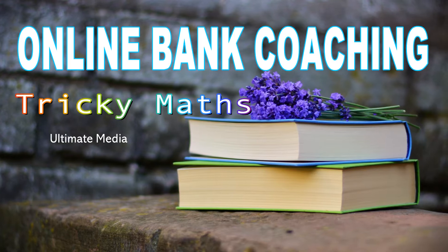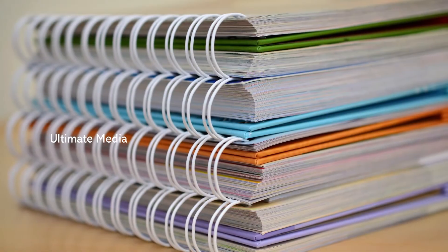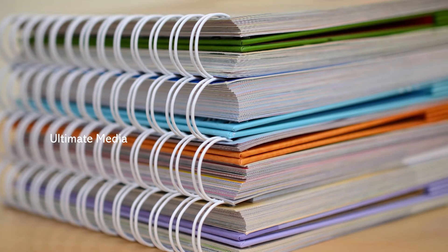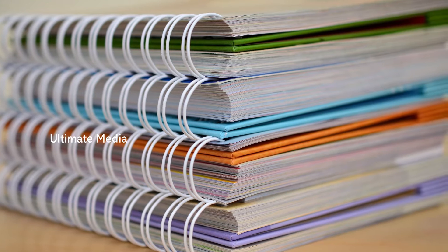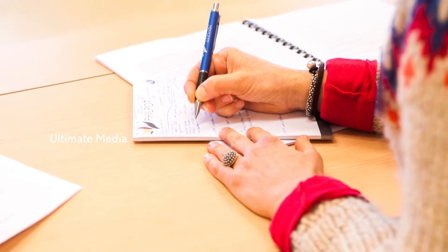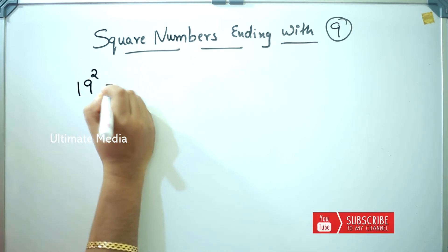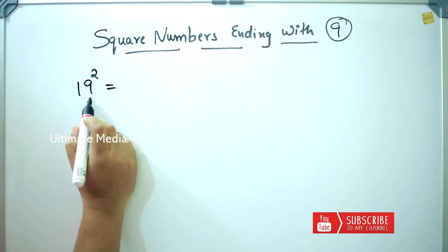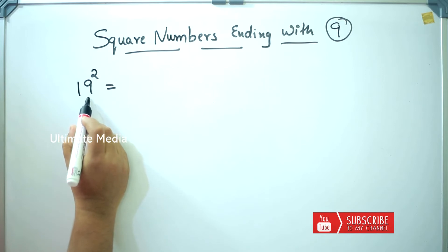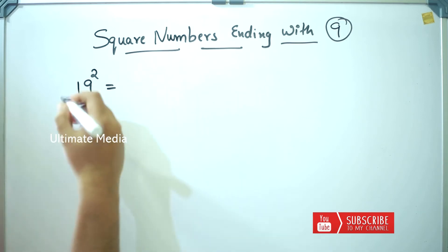We are going to see how to square numbers ending with 9. I am going to show the last digit. We are going to use the zero formula — that is, convert the number ending in 9 to the nearest 10, apply the zero formula.